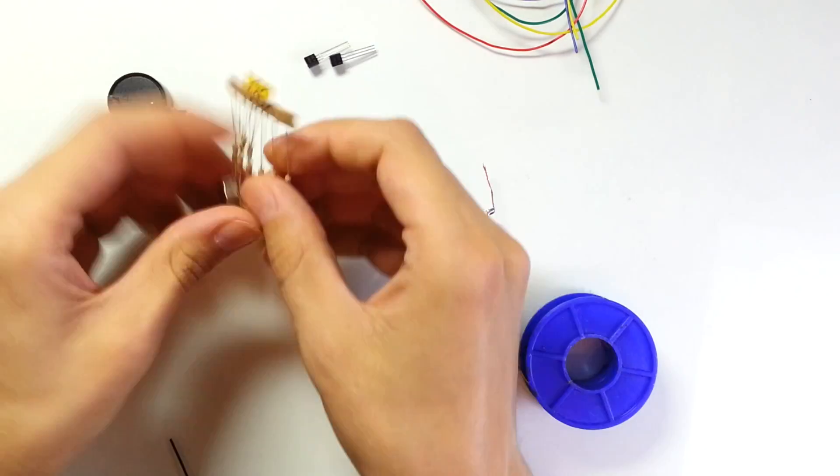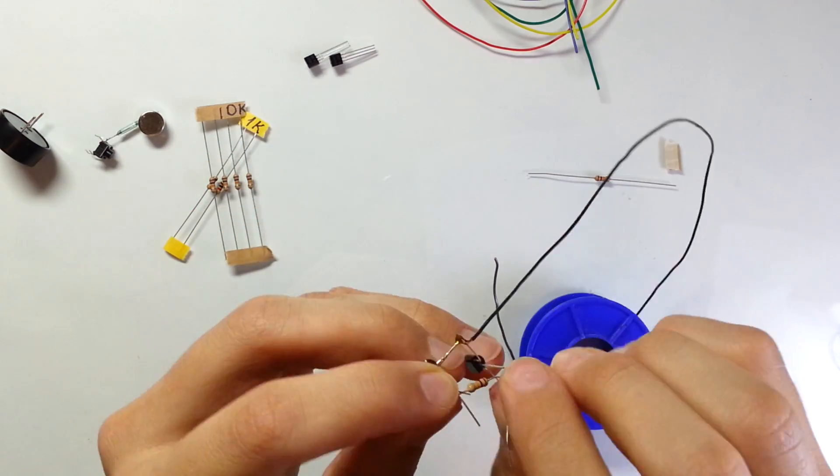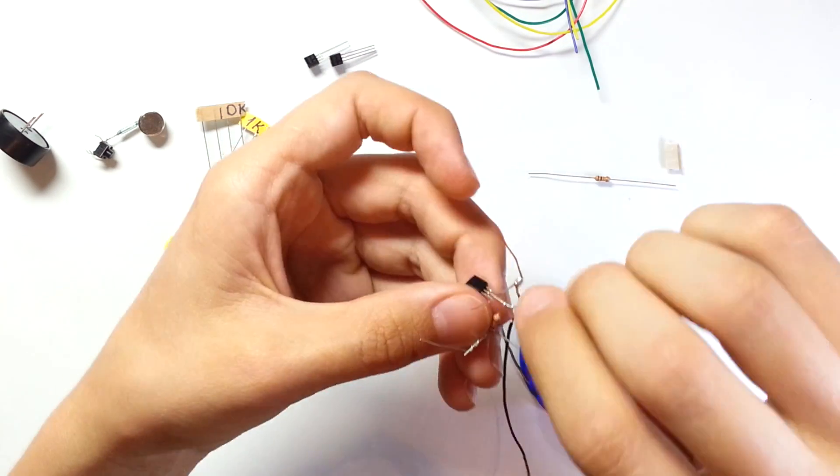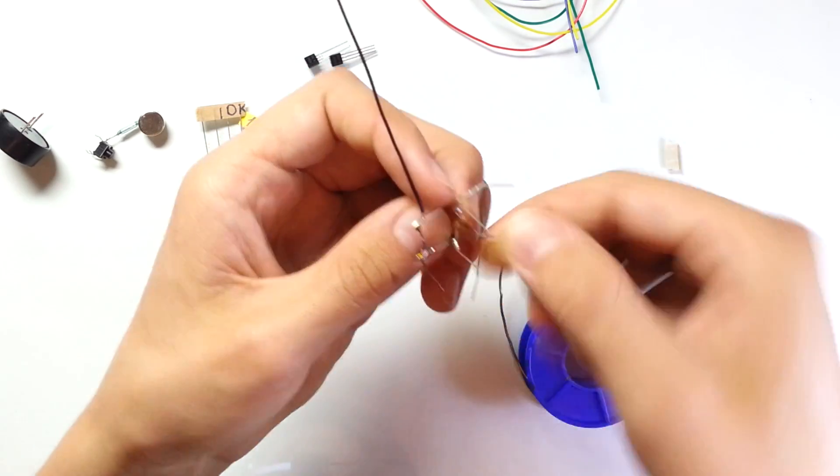Then let's connect two 10 kOhm resistors according to the circuit. Each resistor should be connected from collector lead of the first transistor to the base lead of the second transistor.